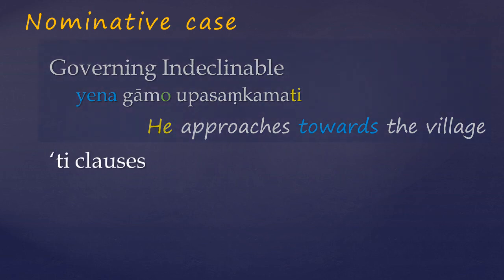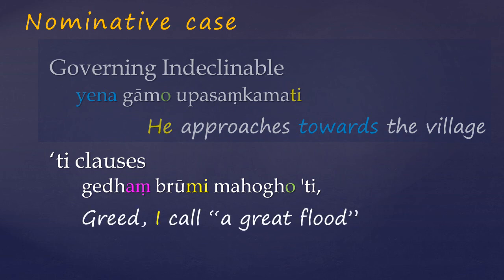Finally, we come to ti clauses. The particle ti signifies that a word or a phrase lying before it is in quotation marks. And the ti marks the end of that quotation. Which means you have to guess where it began. So ti clauses are how Pali marks direct speech. And simple phrases will be placed in the nominative case. But note also, as well as speech, ti clauses also tend to get used for a person's thoughts.